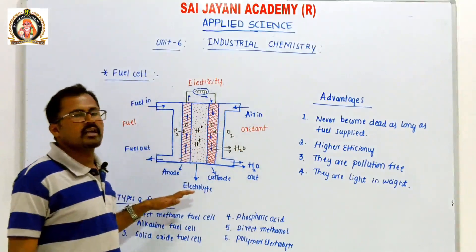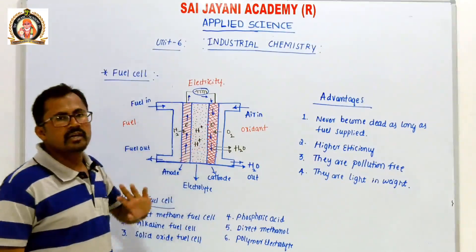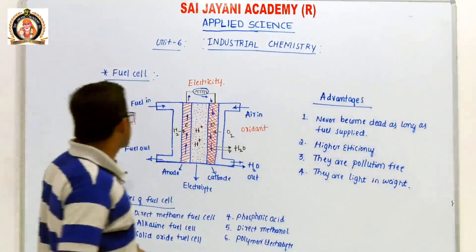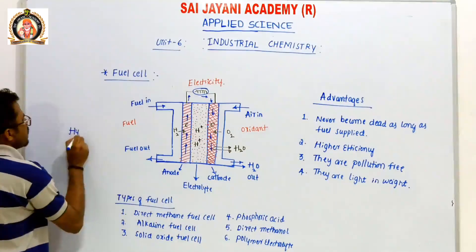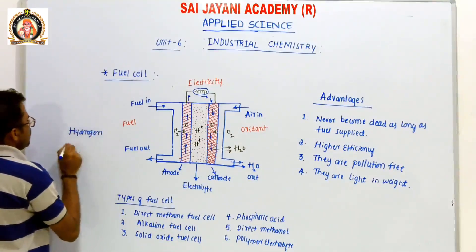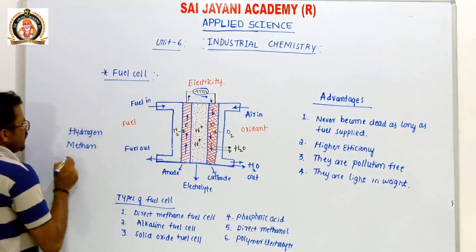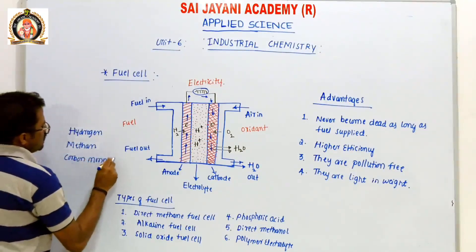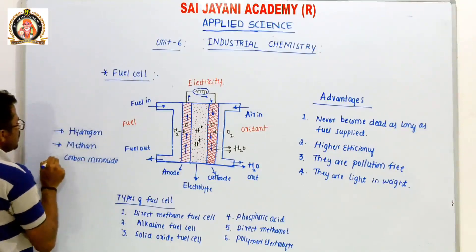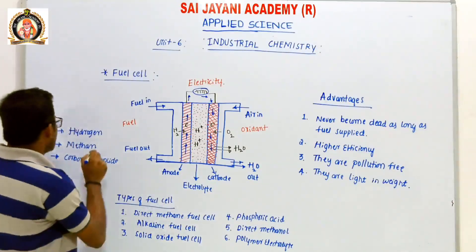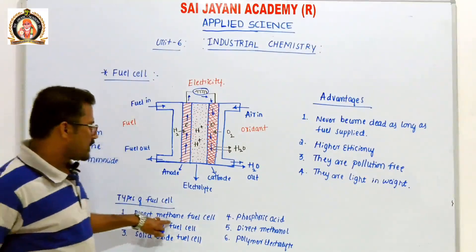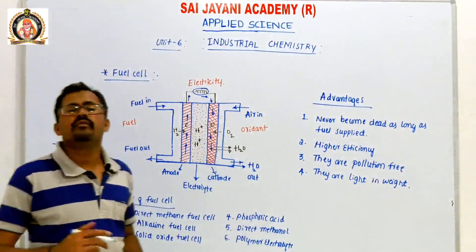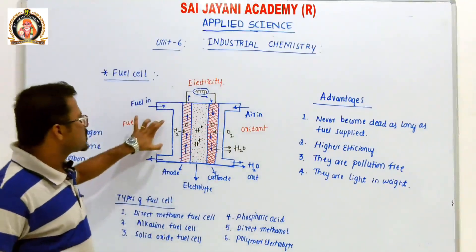During the chemical reaction, chemical energy is converted into electrical energy so we get electricity. The main fuels used in fuel cells are hydrogen, methane, and carbon monoxide. The types include phosphoric acid, methanol, polymer, solid acid, and alkaline fuel cells.